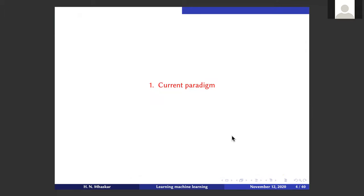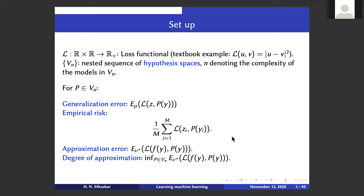Here is how the current paradigm looks. People consider the loss functional — for example in most textbooks they start with the least-square loss. Then there is a nested sequence of hypothesis spaces. I tend to call them polynomials because of my habit, but they are not polynomials in general. For example, they could be neural networks with n neurons, radial basis function networks, or deep networks whose complexity is captured in terms of number of layers, neurons, and weights.